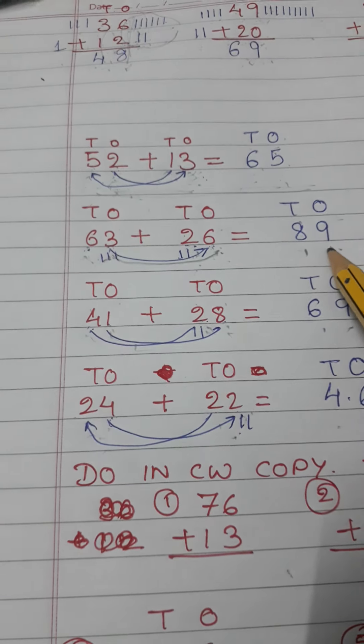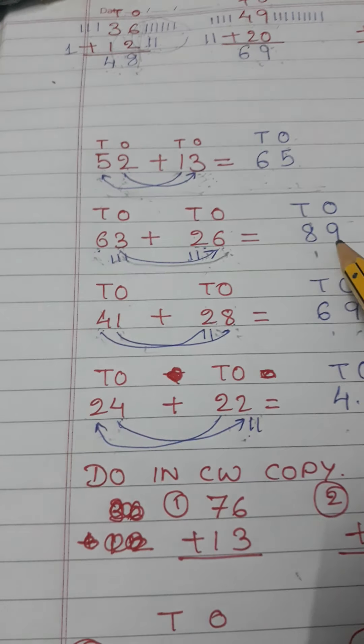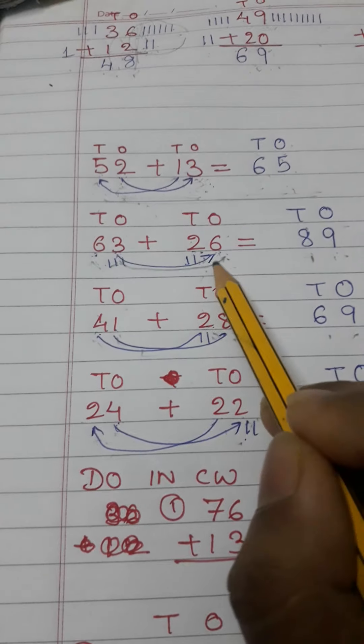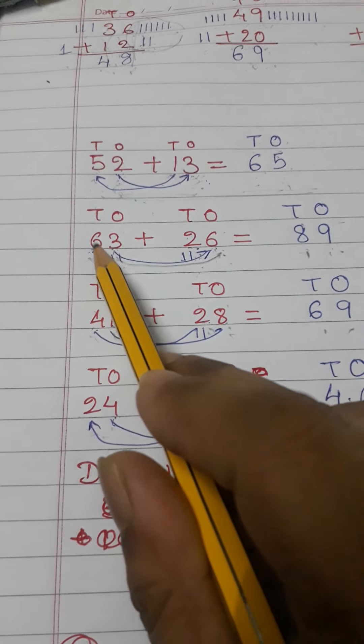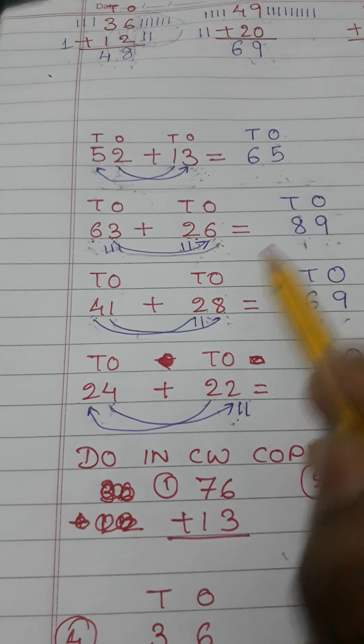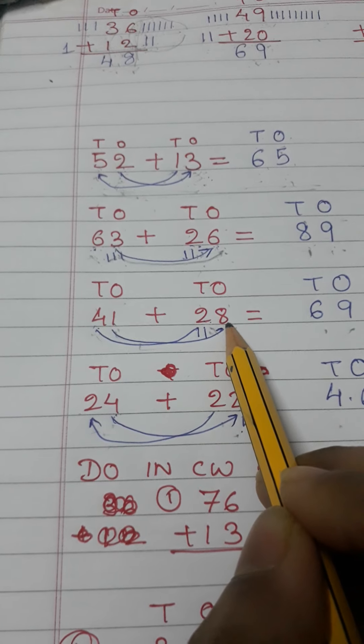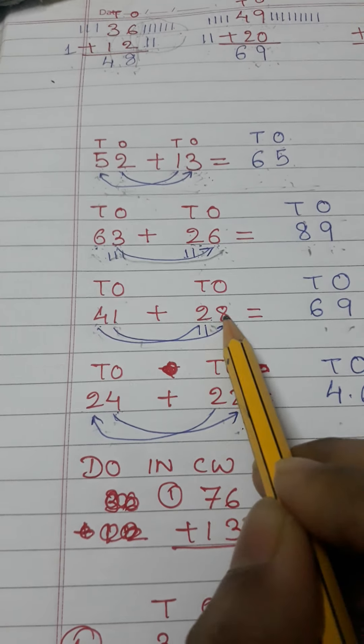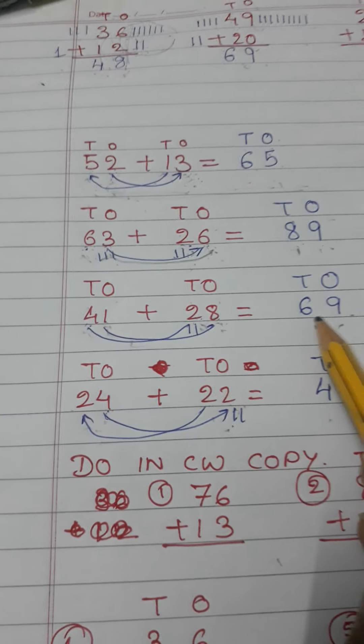When I add tens digit I will write the answer in tens digit. So six plus three makes nine. Again tens digit: six plus two makes eight. Forty-one, twenty-eight. In my ones I have eight and one: eight plus one is nine. Four plus two is six. Similarly here I have done the sums.